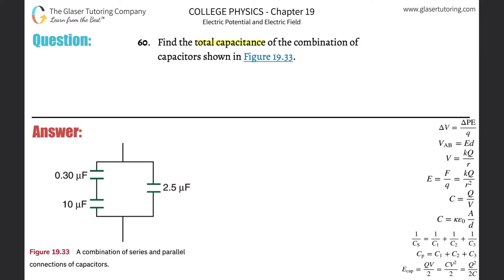Number 60: Find the total capacitance of the combination in the following figure. By the way, check out number 57. I went through a detailed discussion about how to look through series and parallel capacitors, so I'm going to apply this technique a little faster now.